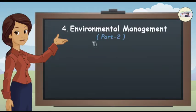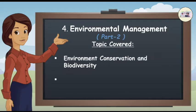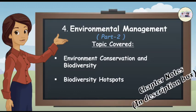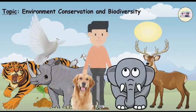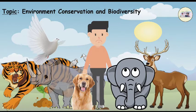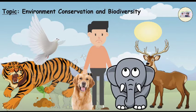Environmental Management Part 2: Environment Conservation and Biodiversity. The most harmful effect of environmental pollution occurs on living organisms. Our living world had been richly diverse. However, we are not able to see some specific animals about which we had listened from our earlier generations. Who is responsible for this?